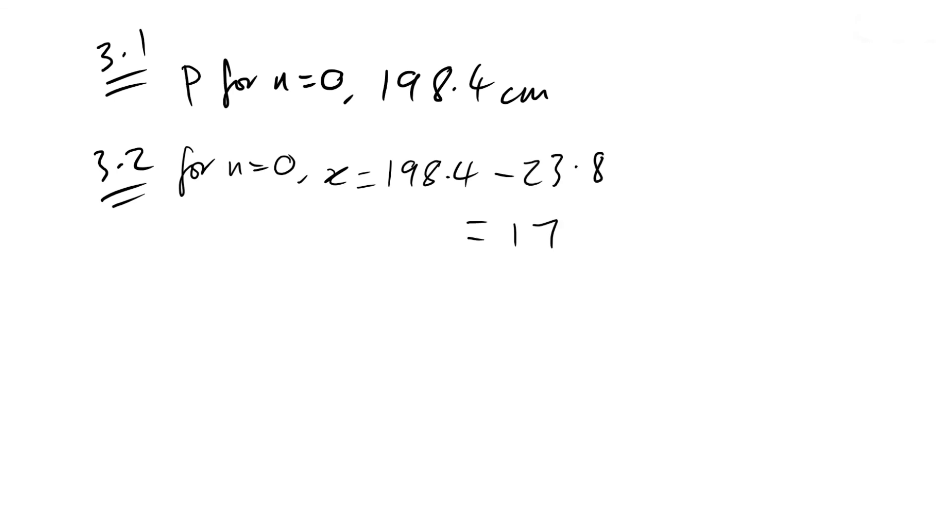And that leaves us with 174.6. And then we just have to do the same for all of them going down, and then we just do the same. We take away 23.8 for all of them and we end up with all of these numbers here. And then we're asked to find all of our log values and then plot those on the graph.